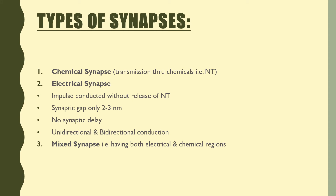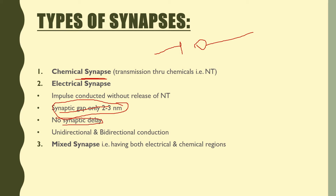We covered the chemical synapse in detail in previous classes. Drawing the diagram: one is the pre-synaptic neuron and the other is the post-synaptic neuron. The key difference between chemical and electrical synapses is the synaptic gap — only 2–3 nanometers in an electrical synapse, but around 10 nanometers or more in a chemical synapse. Another important difference is synaptic delay: there is no synaptic delay in electrical synapses, but in chemical synapses there is a synaptic delay.